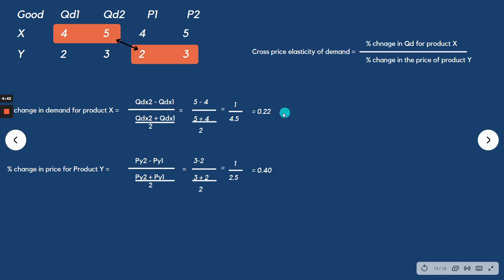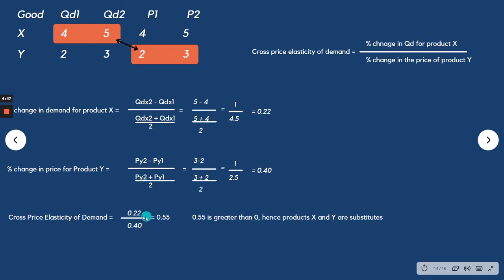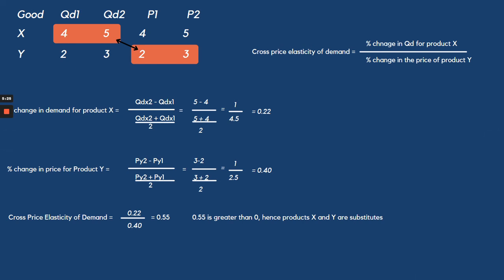Substituting the values, we have 0.222 over 0.40, which equals 0.55. Since 0.55 is greater than zero — a positive number — product X and product Y are substitutes. This is similar to Coke and Pepsi: if you like Coke, Pepsi can be a substitute. So those are substitute products.